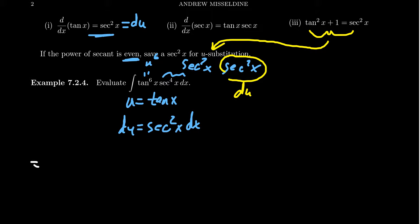Like I said, your tangent to the sixth will become a u to the sixth. Then one of the secant squareds will become a u squared plus one. It's a tangent squared plus one. Remember, tangent is u right now. And then the other secant squared becomes a du. So we're able to convert this trigonometric function into a polynomial function using this u substitution.